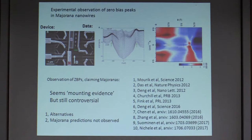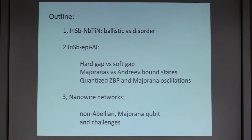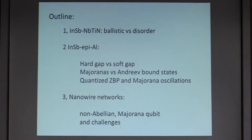The outline of the talk: In the first part on alternatives, I will discuss how we try to eliminate disorders, since most alternatives are due to disorder, eventually reaching ballistic wires. The second part is about the quantized zero-bias peak height — a new system that gives a hard gap and quantized zero-bias peaks, but also trivial zero-bias peaks. The third part, if time permits, is about the Majorana qubit, though I will probably not have time for that.